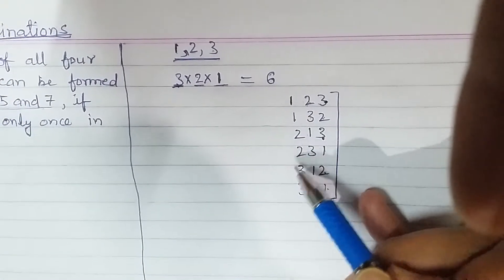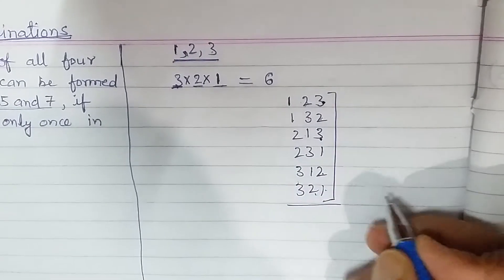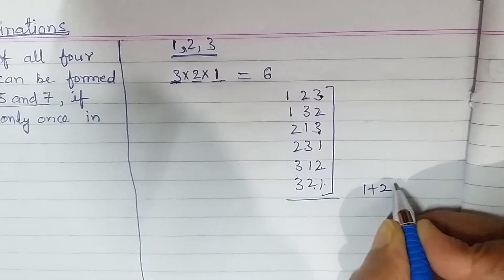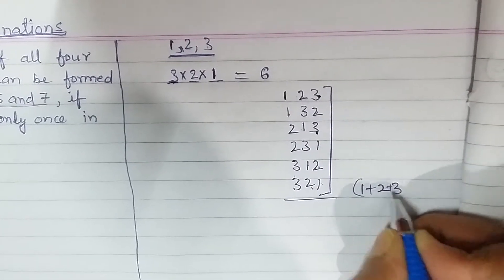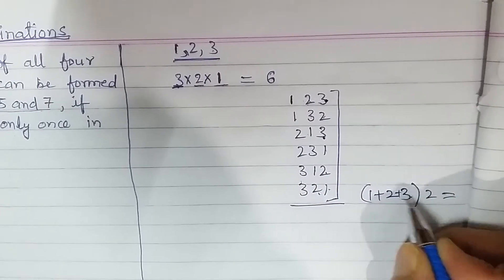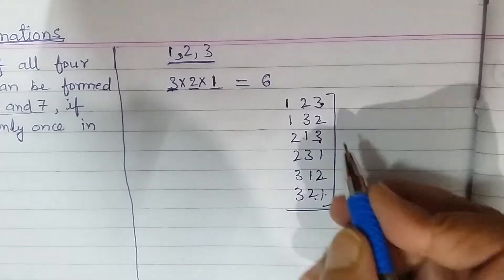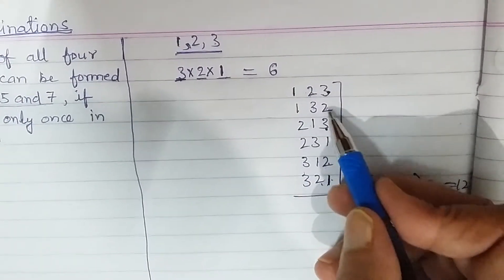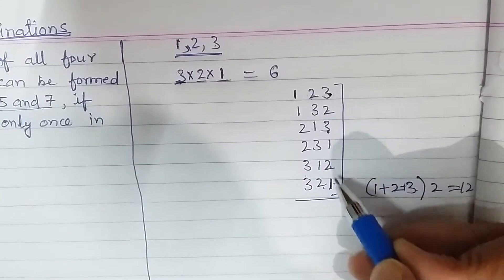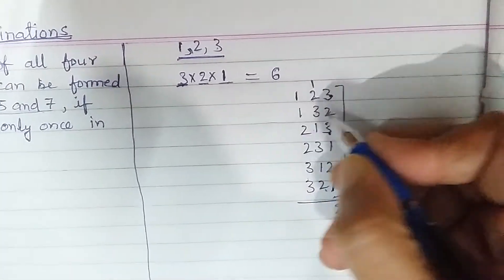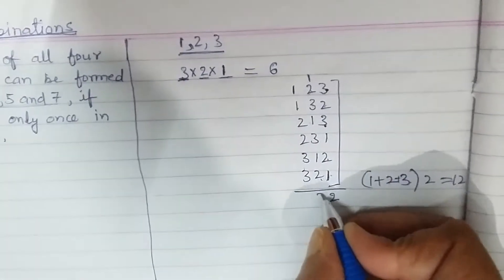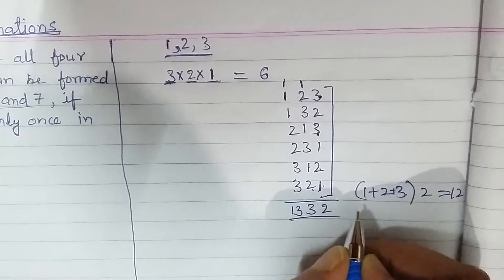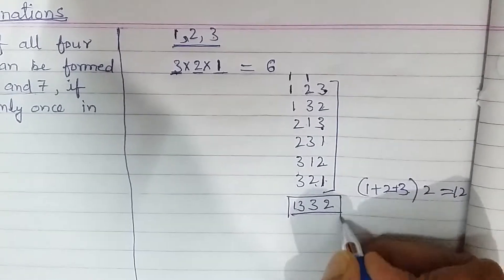We have digits 1, 2, and 3, and each digit appears two times at every place. So the sum of digits at any place is 1+2+3 = 6, and since each appears twice, the sum at each place is 6×2 = 12. Adding with carries: units give 12, carry 1; tens give 12+1 = 13, carry 1; hundreds give 12+1 = 13. The total sum works out to 1332.